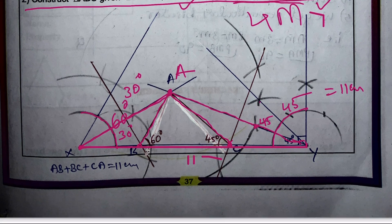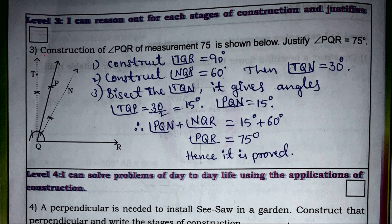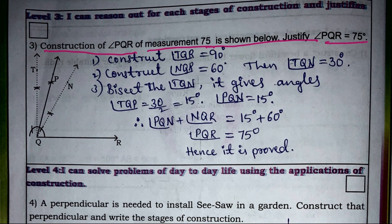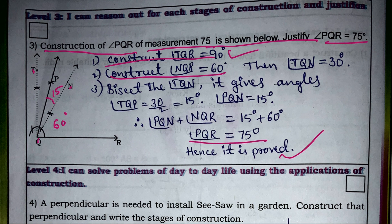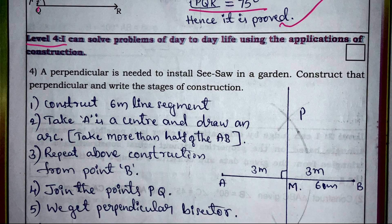Next: construction of angle PQR = 75°. First, construct a 90° angle, then construct a 60° angle. Bisect angle TQN to get 15°. Adding the 60° and 15° together gives 75°. Hence, we prove the construction as required.